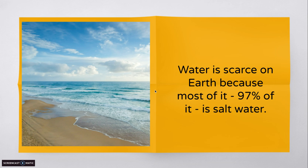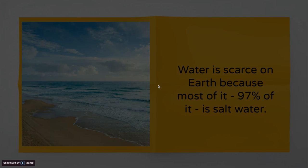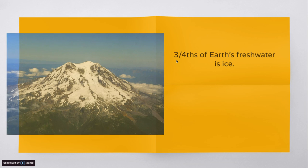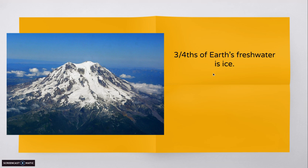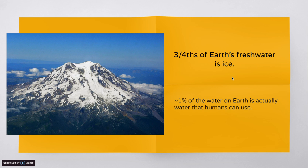So we have 3% left — 3% is fresh water. However, three-fourths of the fresh water on Earth is ice. Think about a mountain with a bunch of snow — that's fresh water, but it's in ice form. So three-quarters of the fresh water is ice. What that means is that less than 1% of the water on Earth is actually water that humans can use. We think about Earth as the water planet — we have tons of water — but a very small percentage of that is water that's actually usable by us.